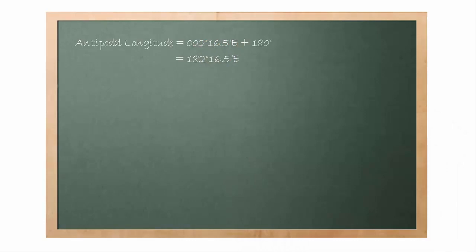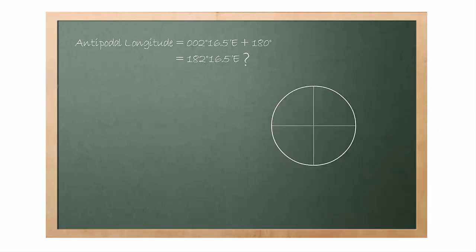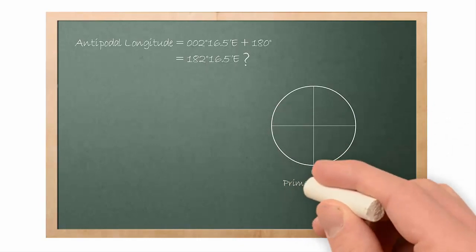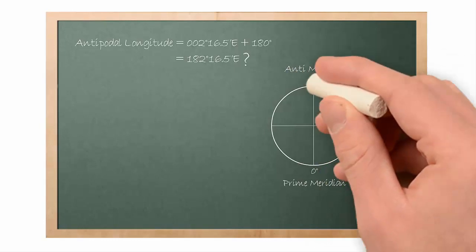182 degree, 16.5 minute. We know there is no such value of 182 degree because the maximum value for longitude is 180 degree. Imagine this is the Earth. We are looking at it from the top view and the center of the cross is the North Pole. Here is the prime meridian. And here is the anti meridian.